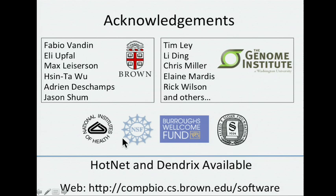I'll conclude with the acknowledgments. My group — Fabio Medina and my colleagues — contributed a lot to the algorithmic developments. My students Max Leiserson and Sintai Wu have been doing a lot of the analysis. For the AML data, we've been working with the AML group at WashU. The algorithms are available, and we encourage you to download and use them. We'd also be happy to collaborate and work with you in tuning them to your analyses.